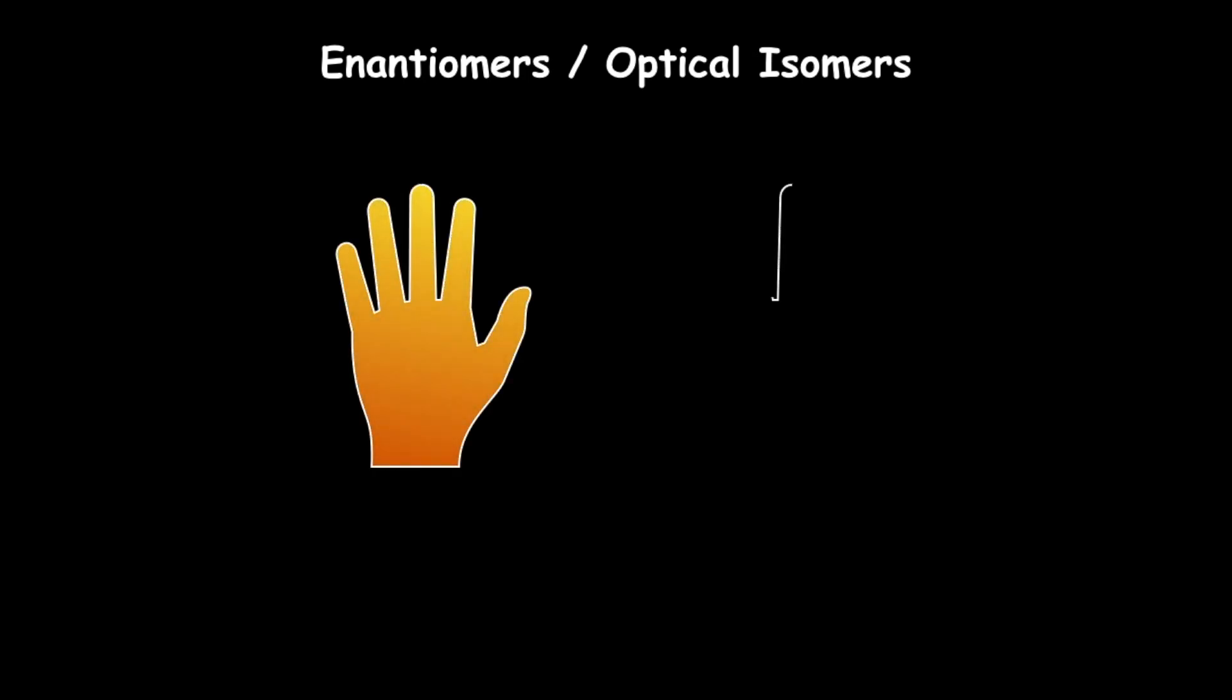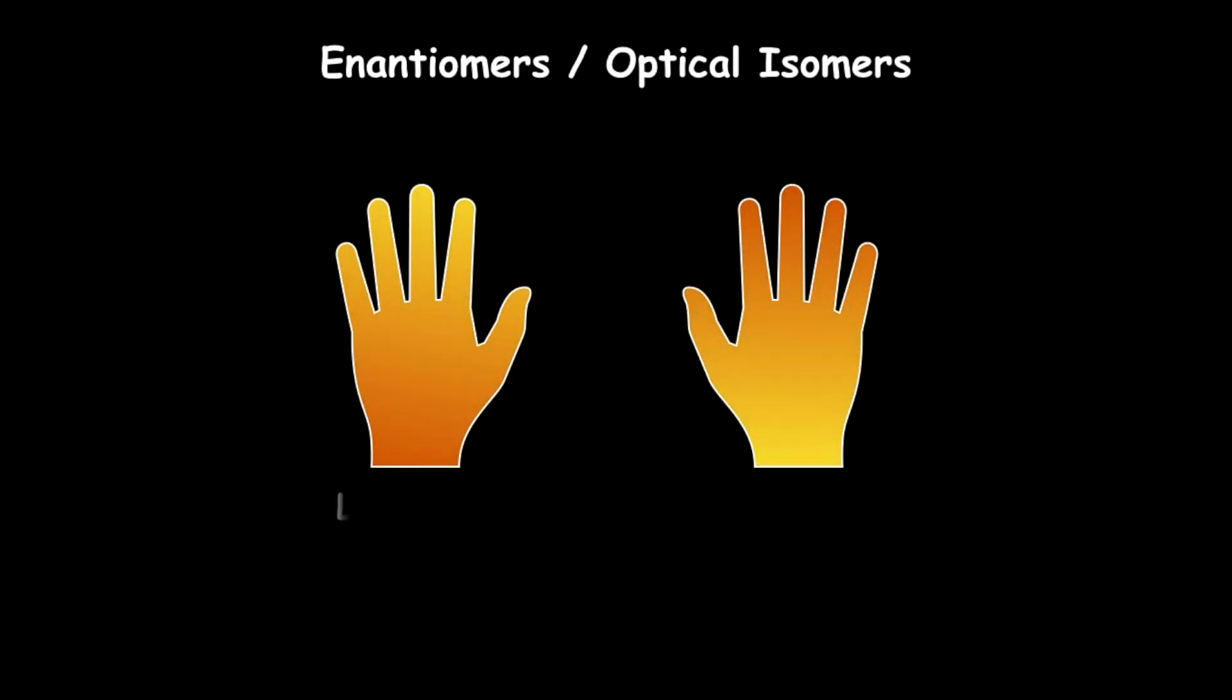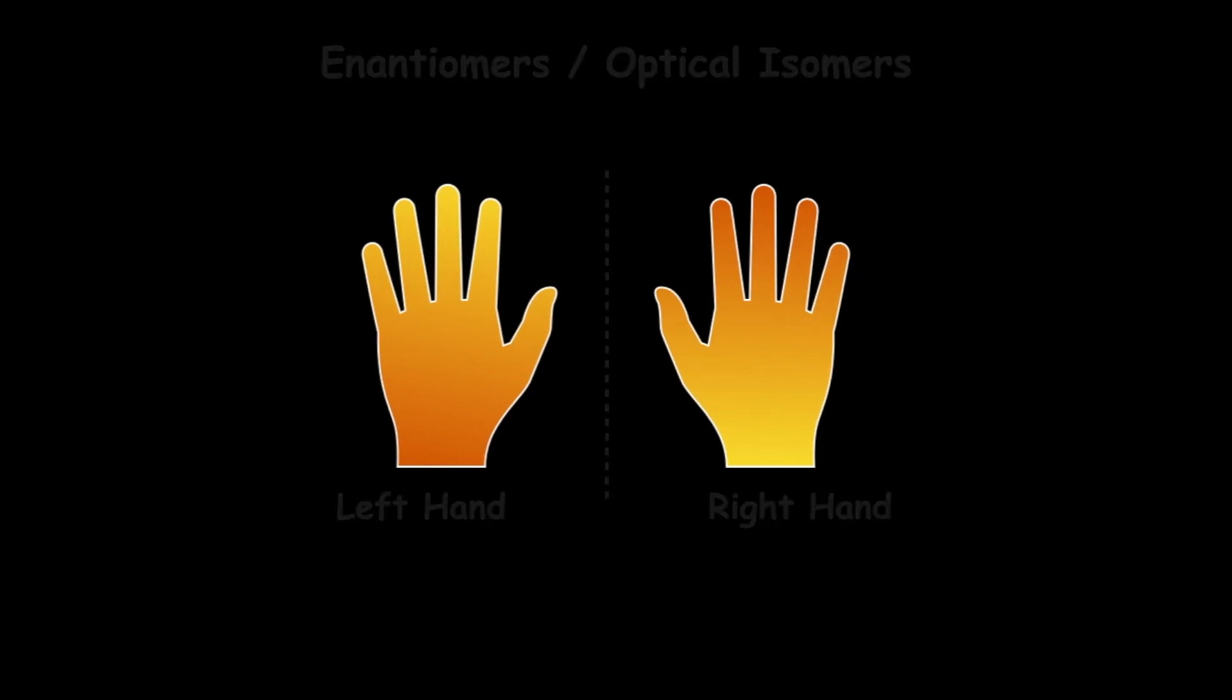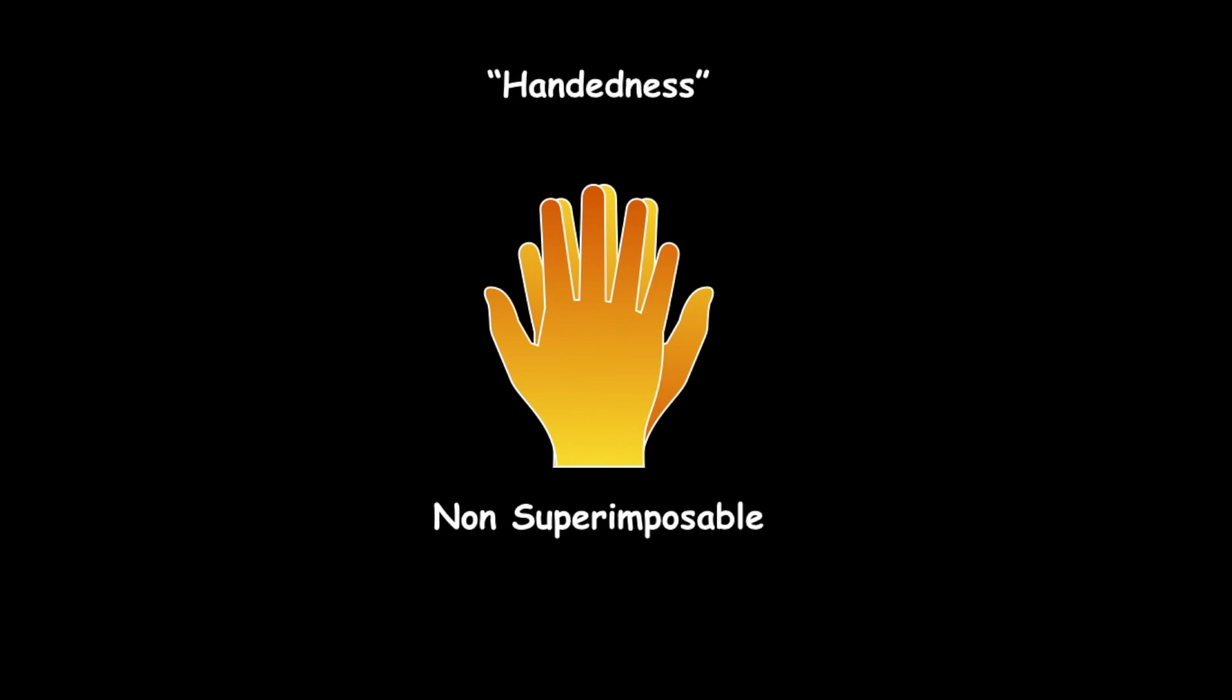Such molecules are non-superimposable and are often said to exhibit a property known as handedness after our non-superimposable mirror images of our left and right hands. Here is a simple example of such a molecule.